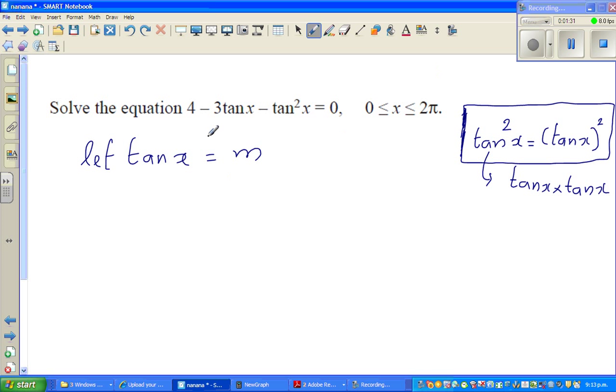So in this, this equation will change to 4 minus 3m minus m squared is equal to 0. I can write the next step like minus m squared minus 3m plus 4 is equal to 0. Now, I don't like this minus in front of the first term. So the next step, I'm not doing it.